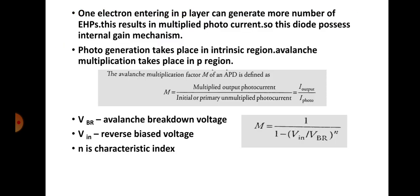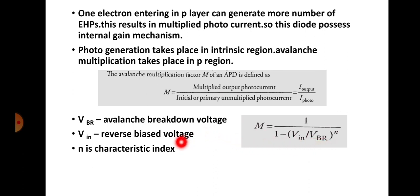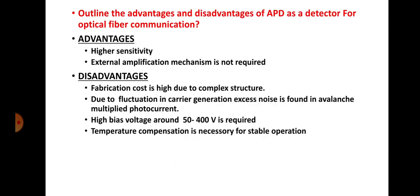The avalanche multiplication factor M of an avalanche photodiode is defined as the multiplied output photocurrent divided by the initial or primary unmultiplied photocurrent: M = I_output / I_photo. This can also be written as M = 1 / (1 − (V_in / V_br)^n), where V_br is the avalanche breakdown voltage, V_in is the applied reverse bias voltage, and n is the characteristic index.